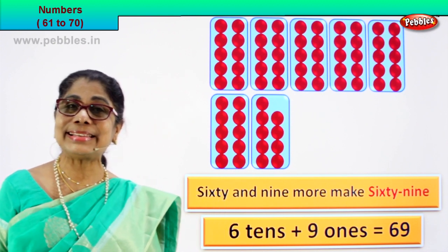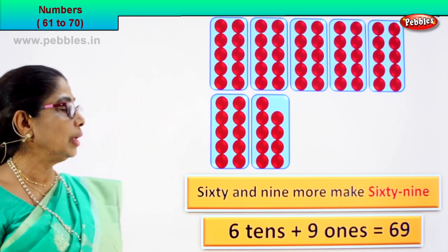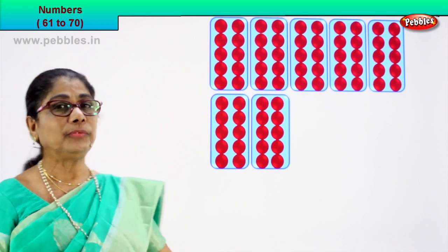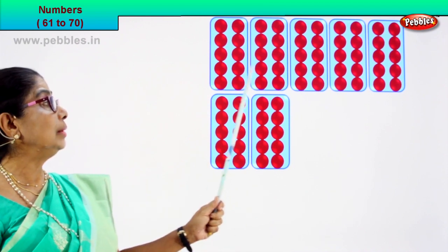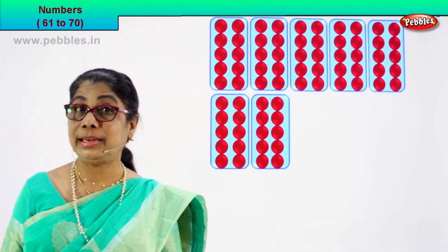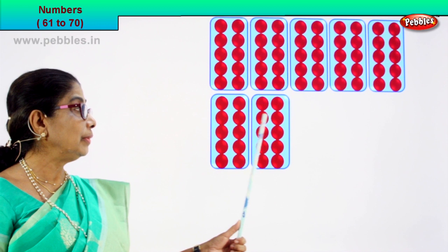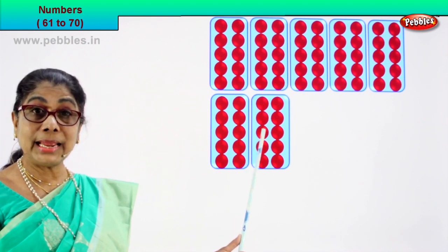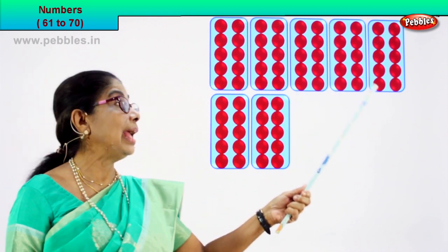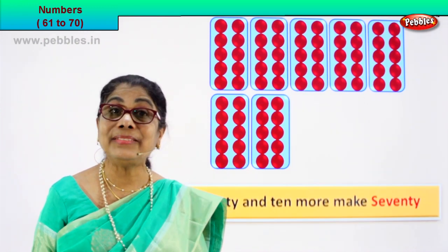Shall we take our next number? We are learning to count and you are becoming very clever. Look what we have next. Here we are. We have lots of boxes. Let's count the boxes. One, two, three, four, five, six, seven. There are seven boxes. Let's count the last box. One, two, three, four, five, six, seven, eight, nine, ten. There are ten here. One ten, two tens, three tens, four tens, five tens, six tens, and seven tens. Sixty and ten more make seventy.